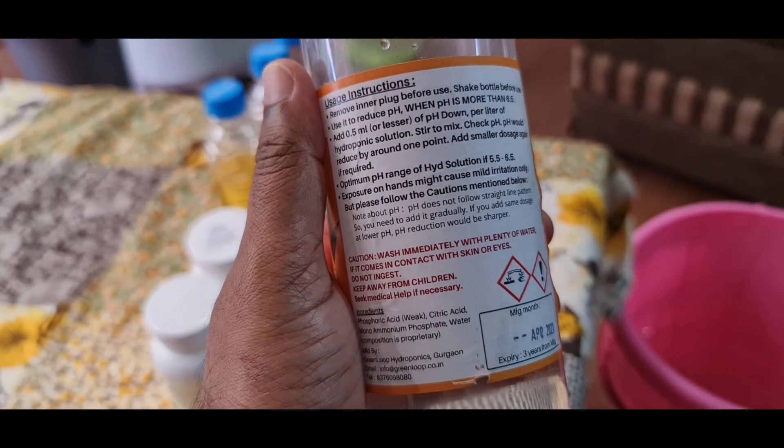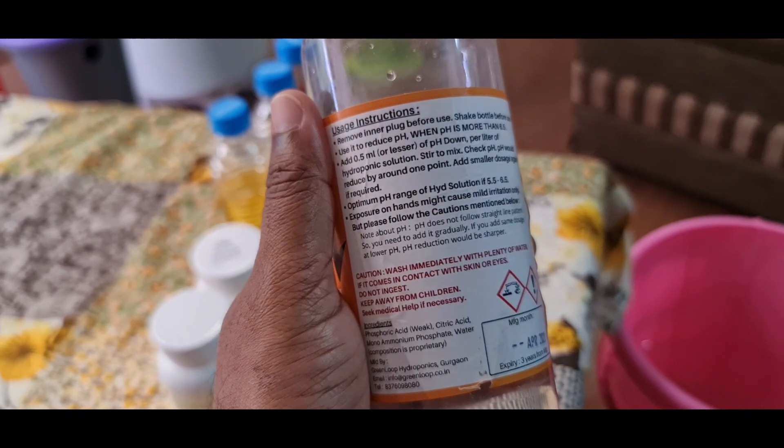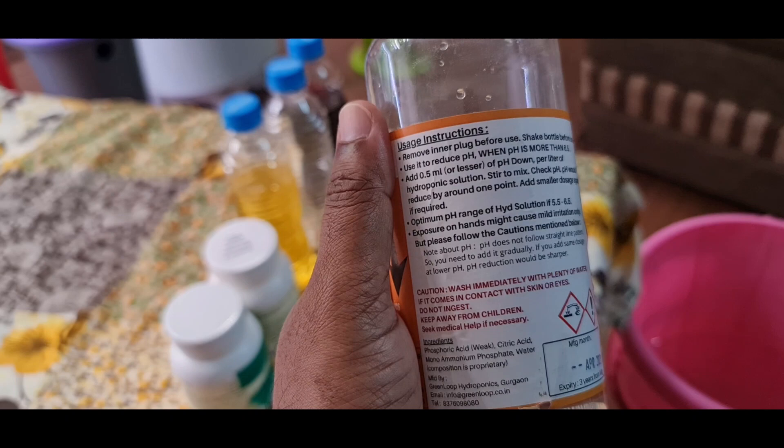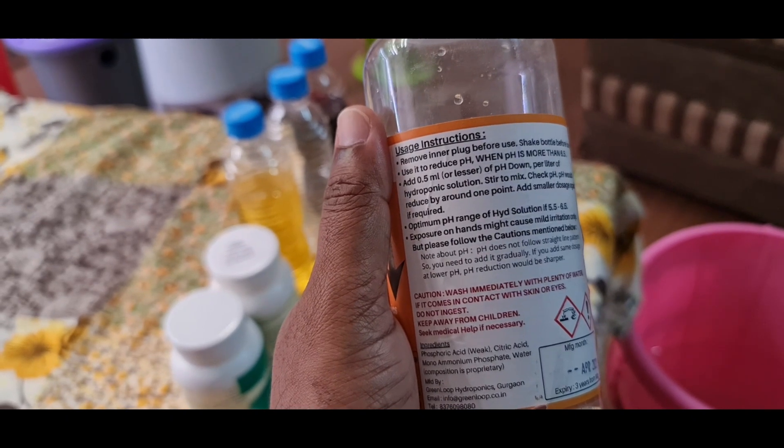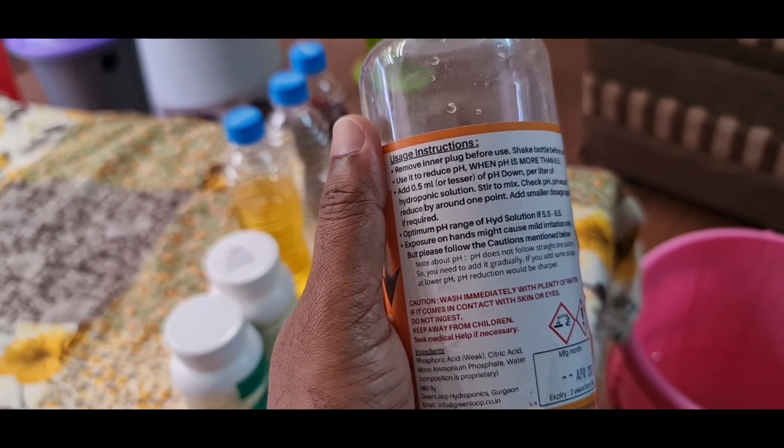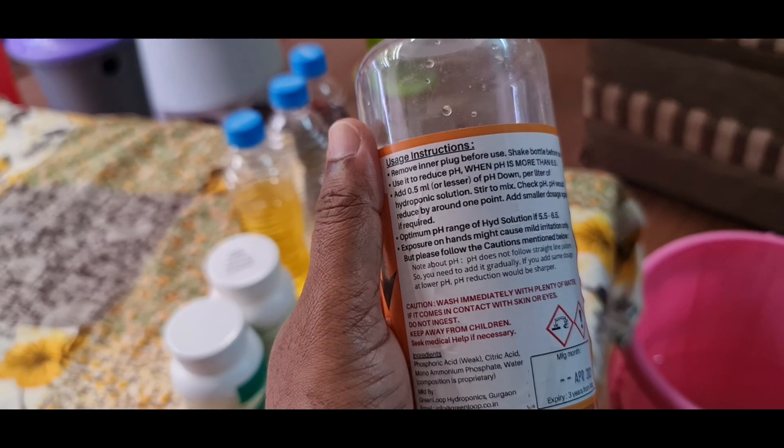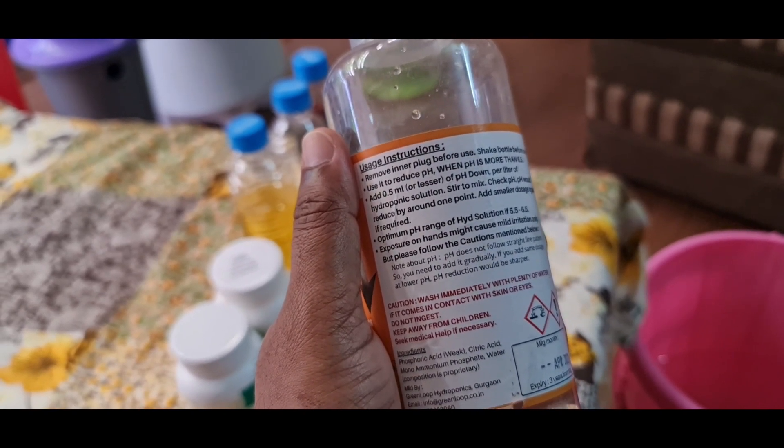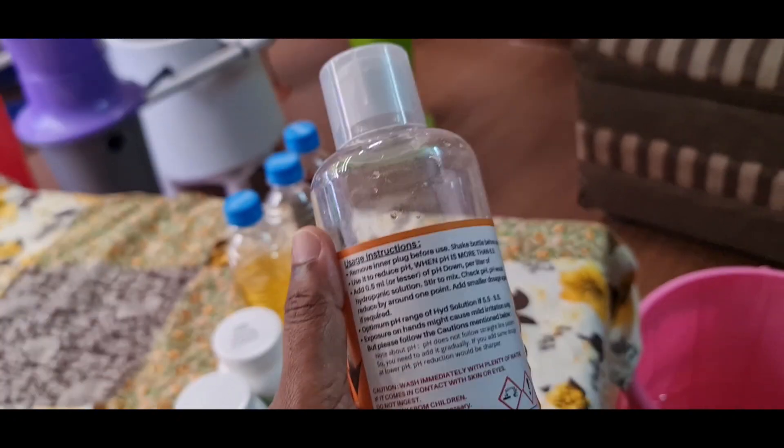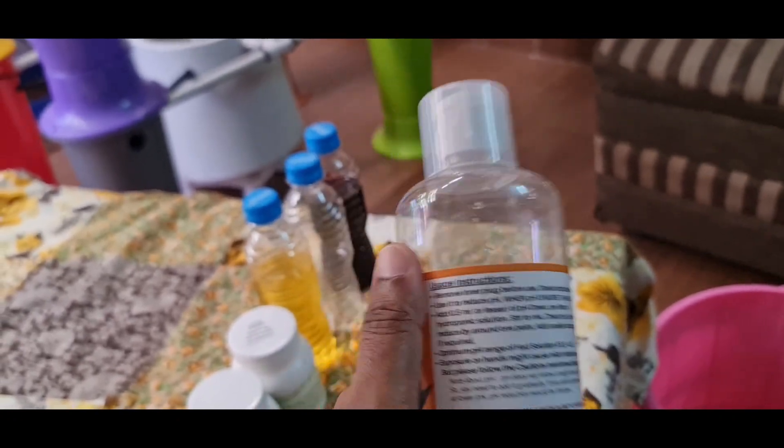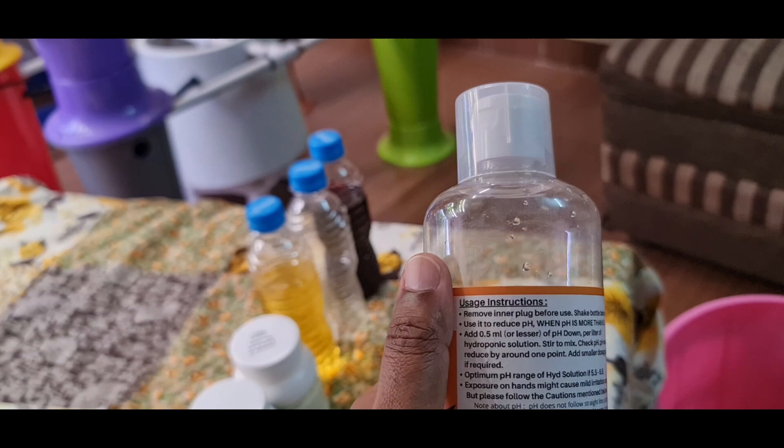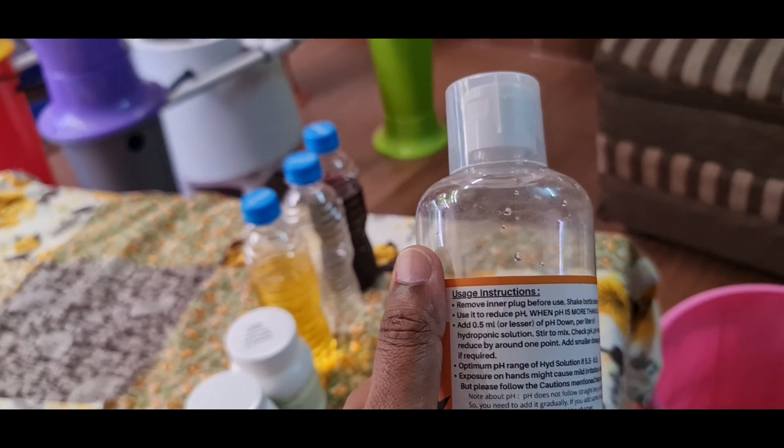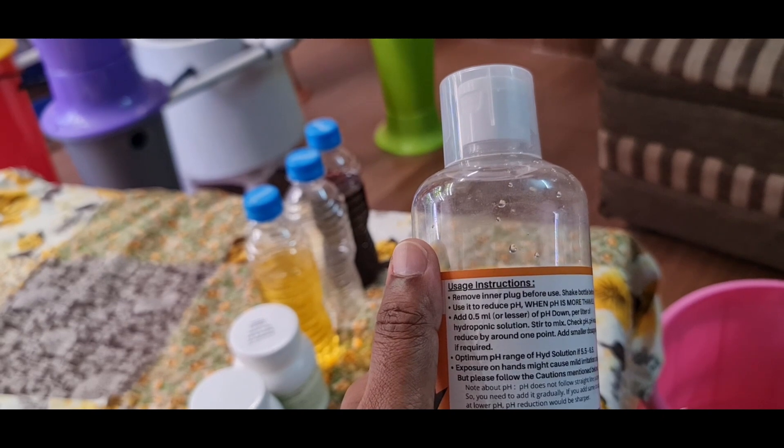This is the pH down solution which is available online. You can buy it. Recommended dosage is add 0.5 ml of pH down solution per liter. Here is 15 liters. 0.5 times 15 is nearly 8 ml. We can add 8 ml to our solution to make this pH a little acidic. Let us go ahead and add and check how pH changes.